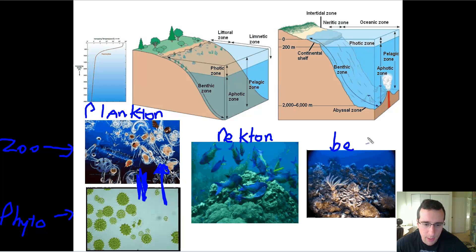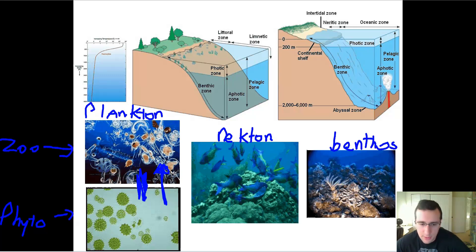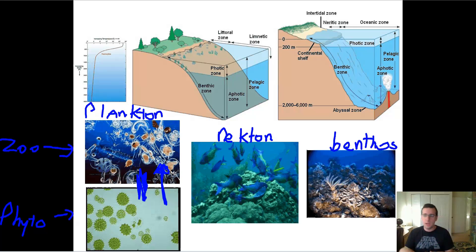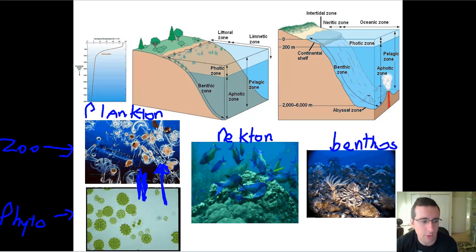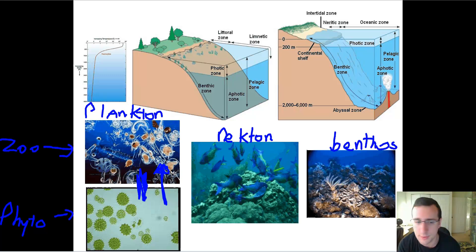Finally, you also have the benthos — organisms that live crawling on the bottom of the ocean. Most of them are substrate feeders or filter feeders that live off the detritus at the bottom of the ocean. A lot of them act as detritivores or decomposers, living off all the dead stuff falling from the top of the ocean.